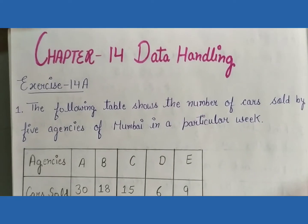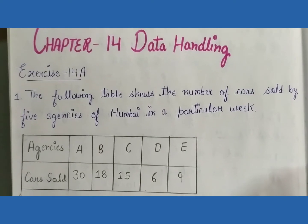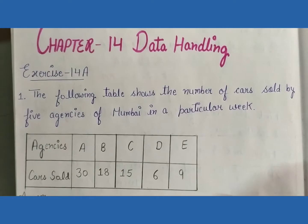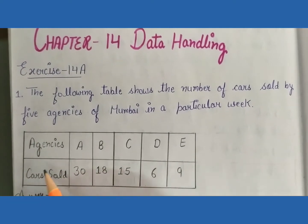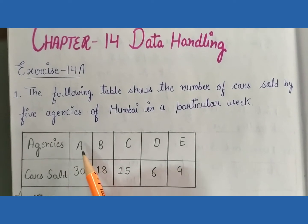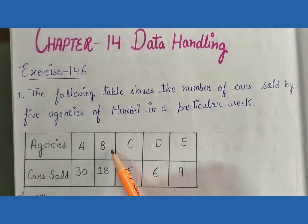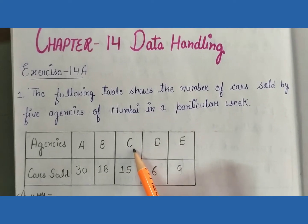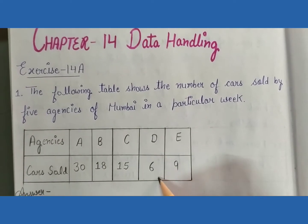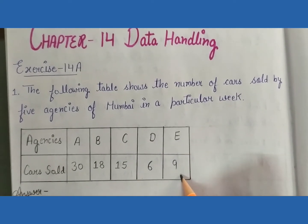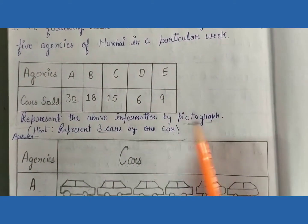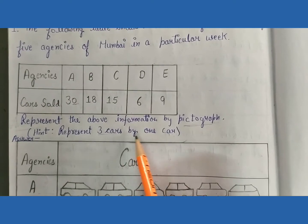Now start exercise 14a, question number 1. The following table shows the number of cars sold by 5 agencies of Mumbai in a particular week. Agency A sold 30 cars, Agency B sold 18 cars, Agency C sold 15 cars, Agency D sold 6 cars, Agency E sold 9 cars. The question is: represent the above information by pictograph. Hint: represent 3 cars by 1 car symbol.